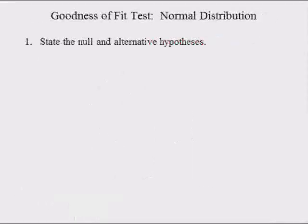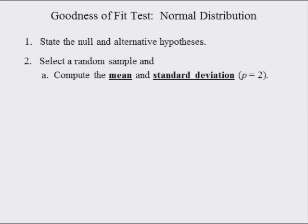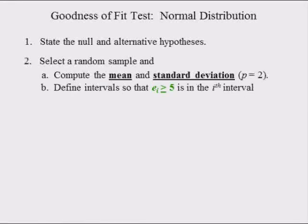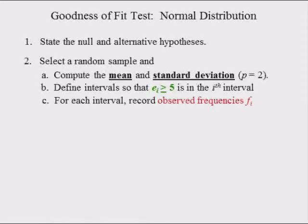For the goodness of fit test for a normal distribution, state the null and alternative hypotheses. The null hypothesis is always in the form: the data follow the normal distribution. Select a random sample and compute the mean and standard deviation of the sample. Since we do not know the population mean and the population standard deviation, the number of estimated parameters is equal to 2. Define the intervals so that the expected frequencies are all equal to 5 or more, and for each interval record the observed frequency.